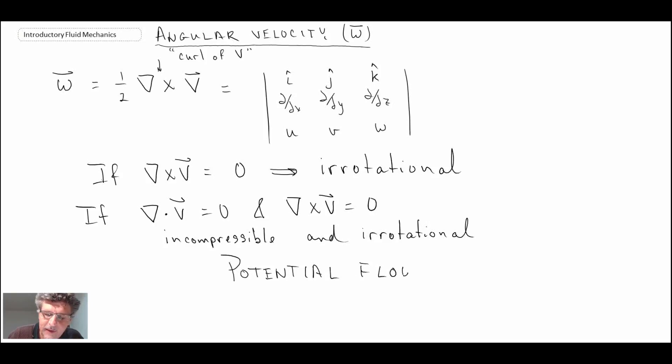We will be looking at that later in this course. You can do some interesting things with potential flow, but it only applies if we have these two requirements: del dot V equals zero and del cross V is equal to zero. Those are some things that you can do with velocity. We looked at acceleration, volumetric flow rate, mass flow rate, volumetric expansion, and finally angular velocity. Those are things you can do with the velocity vector field, and we'll be using those throughout this course.